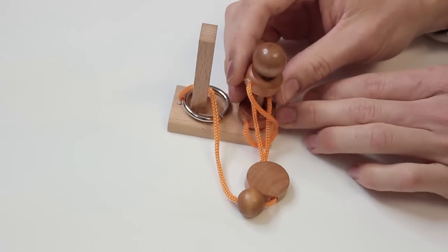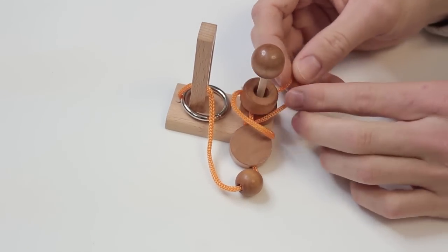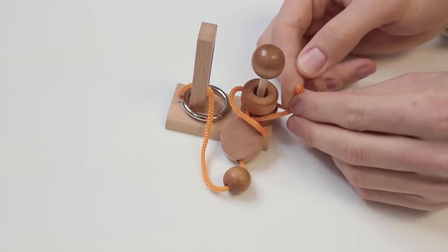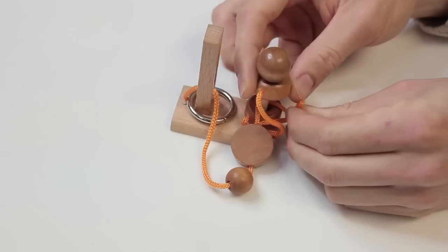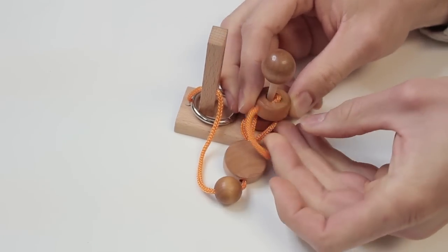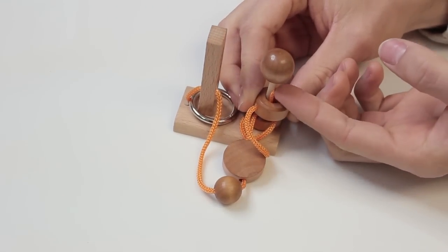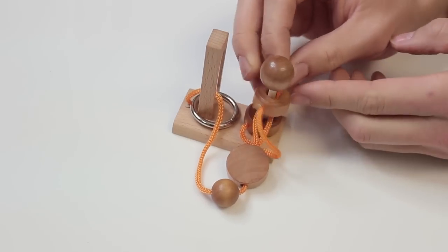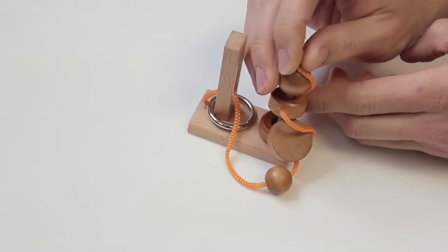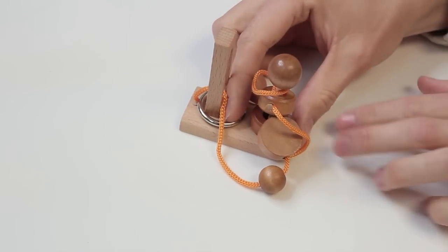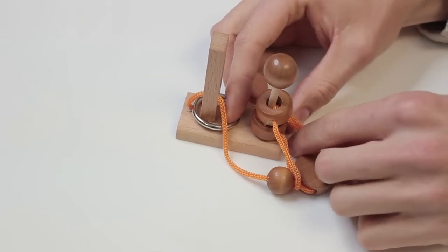Then what you want to do is take that loop that's attached to the wooden disc and make it into a point so that you can push it up through the top ring, pull it out with your fingernails if necessary, and then put it over the top of the wooden ball on the post and slide it down again through that ring.